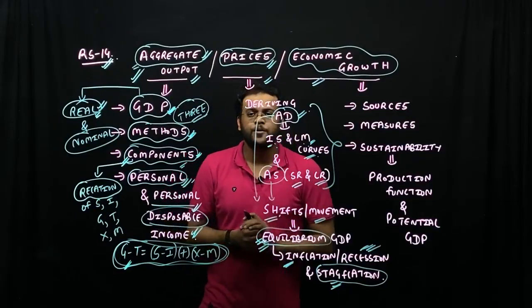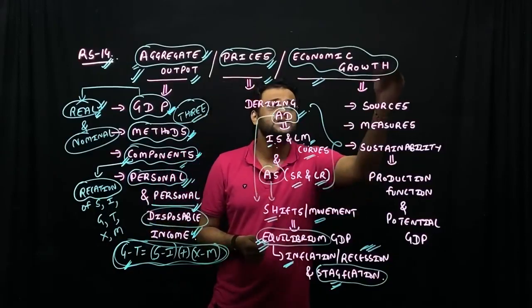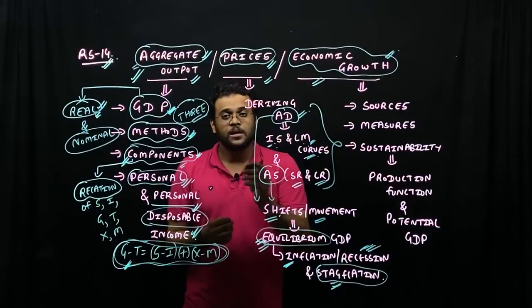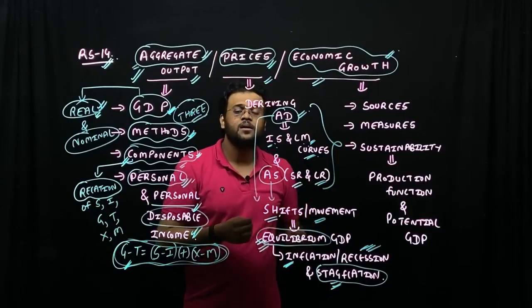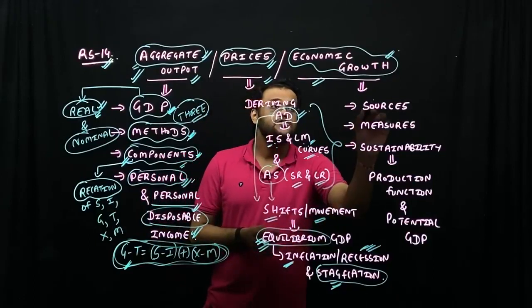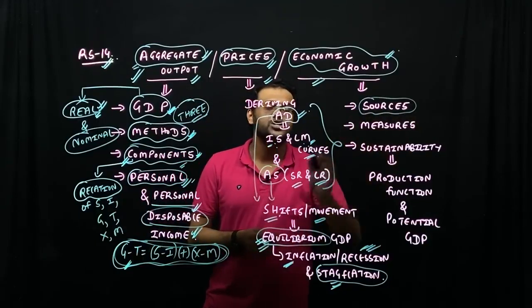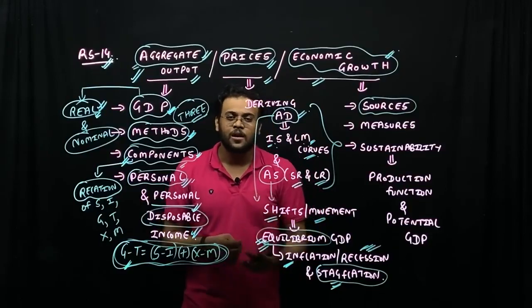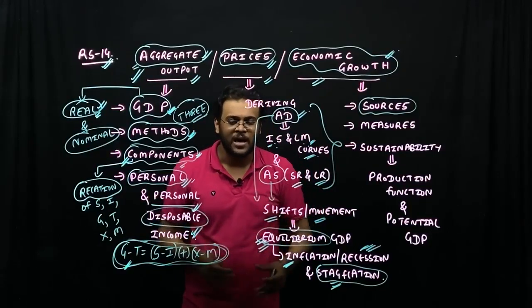This is our second portion. Then we will go to the third portion. If GDP is negative, that is negative economic growth. If GDP is growing, that is positive economic growth. What are the sources of economic growth? Majorly, economic growth depends upon labor, capital, technology, natural resources. These all are resources.